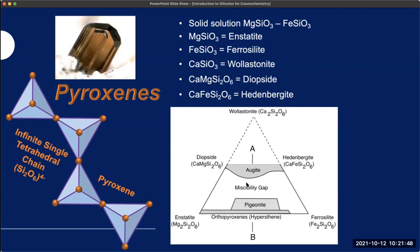There's a miscibility gap in the pyroxene system — a range of compositions you simply can't make. You can make enstatite and compositions between enstatite and ferrosilite, but you can't make many intermediate compositions between them. You can put in one calcium and one magnesium instead of two magnesiums — half-and-half — but not arbitrary combinations. Similarly, on the iron-rich side it can be all iron or half iron and calcium, but you cannot make compositions with more calcium than half, whether iron-rich or magnesium-rich. Wollastonite sits at the calcium-rich peak.